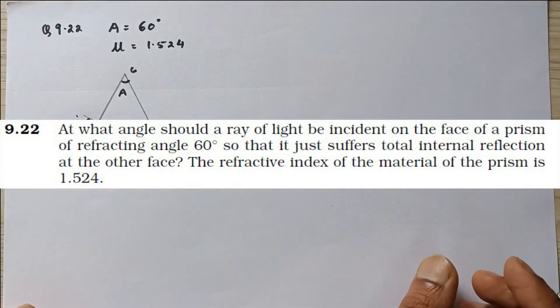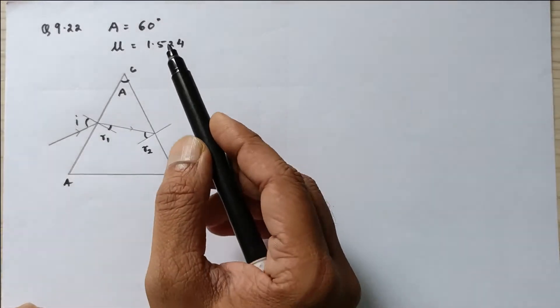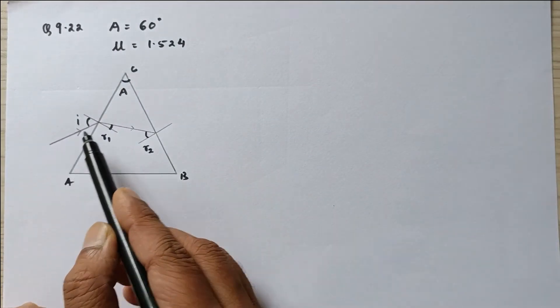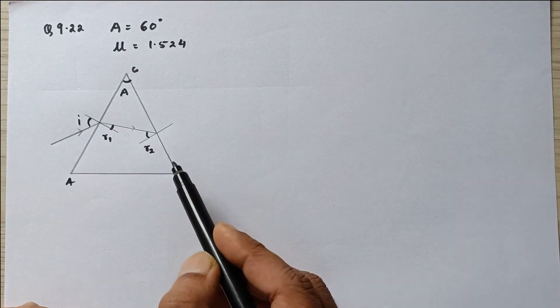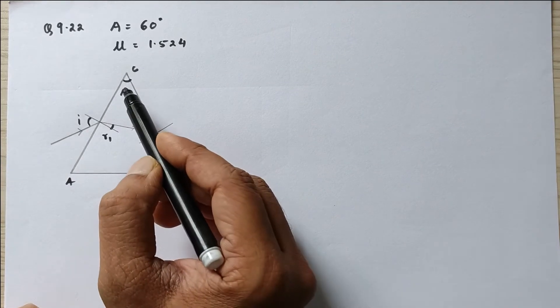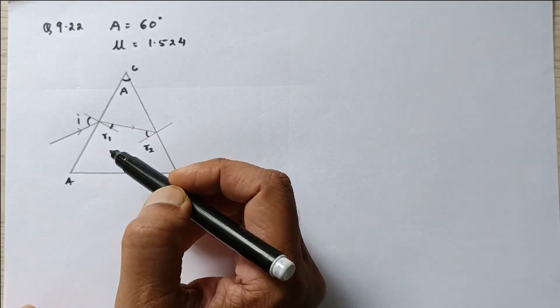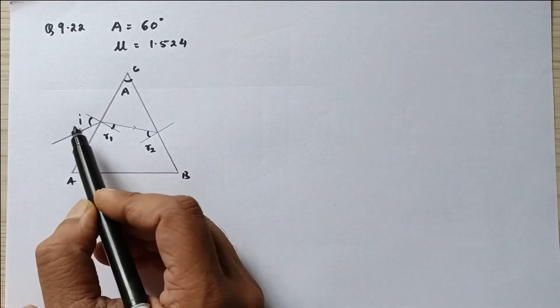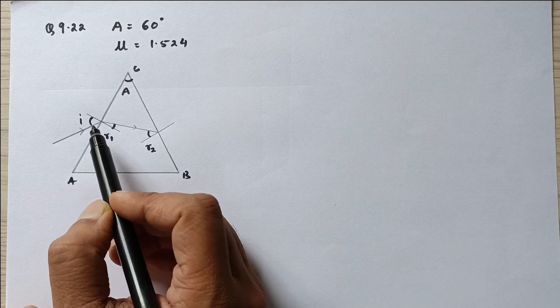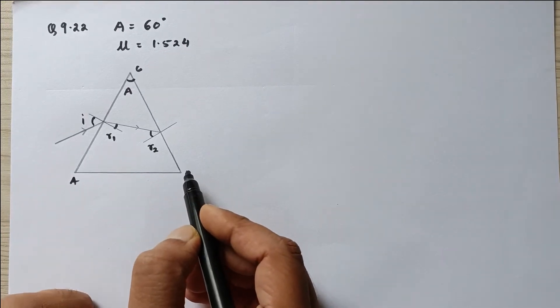Let's discuss problem number 9.22 from NCERT textbook standard 12 physics, ray optics. Here we are given a prism whose angle of prism is 60 degrees, which means when the light passes through the AC and BC surfaces, the angle between those two surfaces is known as angle of prism. The refractive index of the prism is given. Now we are supposed to find the angle of incidence for which the light coming out just undergoes TIR.